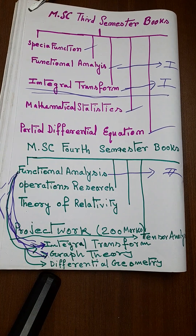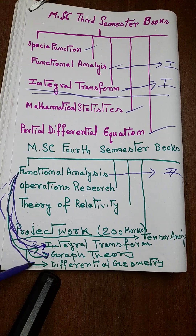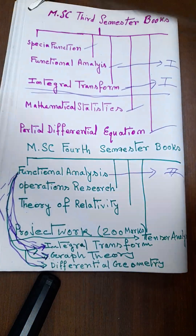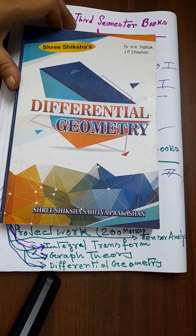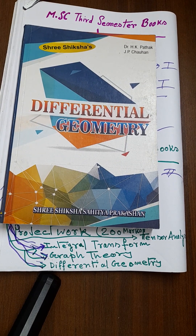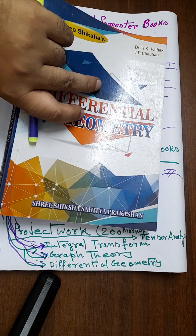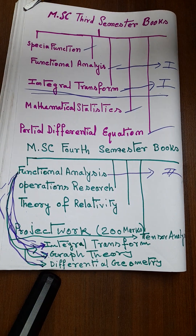For some universities, Functional Analysis is replaced by Graph Theory, and for others by Differential Geometry. I don't have a specific book for Graph Theory right now, but for Differential Geometry, this is one of the best books for MSc examination. It is written by Dr. H.K. Patat and J.P. Choban, and is full of examples with subject matter written in a very easy-to-understand manner.